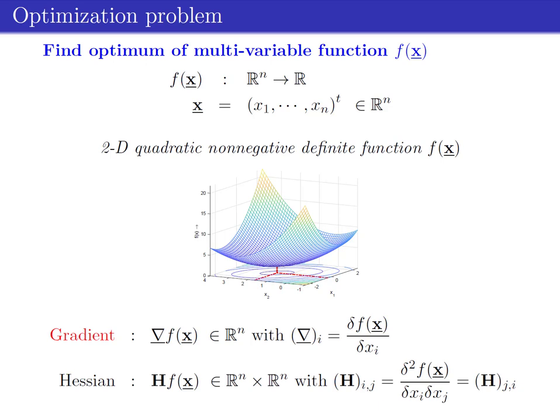Furthermore, the Hessian, which is a symmetric matrix, becomes important in the derivation of the stability properties of the SGD algorithm. A closed-form solution for the optimum is generally difficult or not possible. In such situations, it becomes necessary to use an iterative procedure in order to approximate the optimal solution.